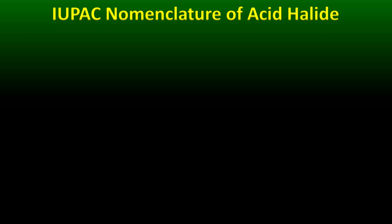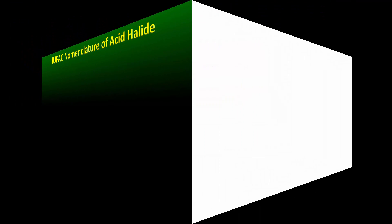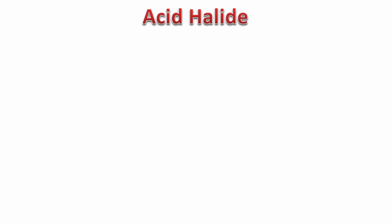Hi everyone, this is Kalyan Kumar and welcome once again to the videos on IUPAC nomenclature of various types of organic compounds. Today we are going to cover acid halides. Acid halide, as the name suggests, is a derivative of carboxylic acid with a halogen in it. Carboxylic acid is RCOOH, and we remove the OH and replace it with a halogen to get the acid halide.